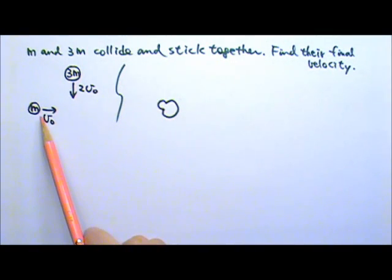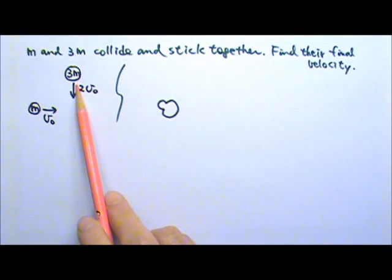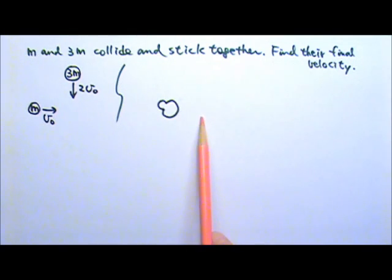An object M traveling at VO to the east collides with another object of 3 times the M and traveling at twice the VO to the south. They stick together after the collision, find their final velocity after the collision.